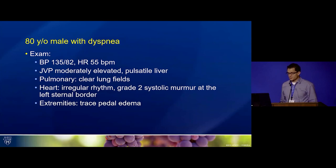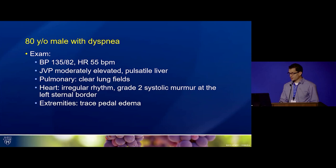On exam: blood pressure 135 over 82, pulse of 55, moderately elevated jugular venous pressure. The liver was reported to be pulsatile. Irregular heart rhythm, a grade 2 systolic murmur at the left sternal border, and just trace pedal edema was reported.